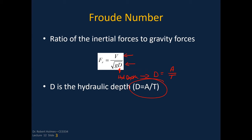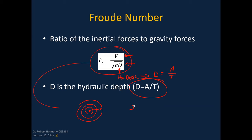If I take a pebble and throw it into a pool of quiescent water, this will emanate a set of waves. They will emanate out, and their velocity will be equal to the square root of G times the hydraulic depth. That's the definition — we're going to do a lot more with the Froude number a little later on.